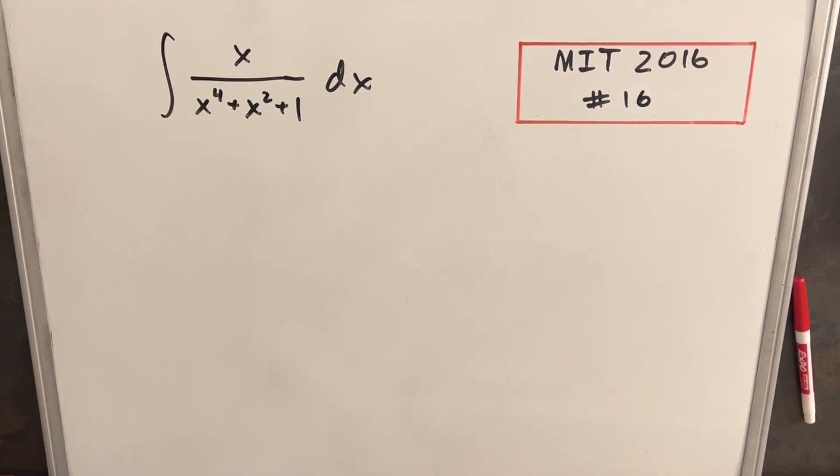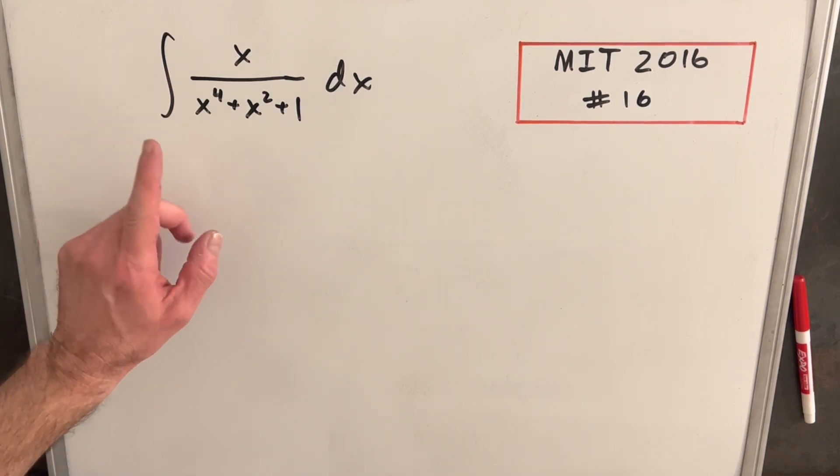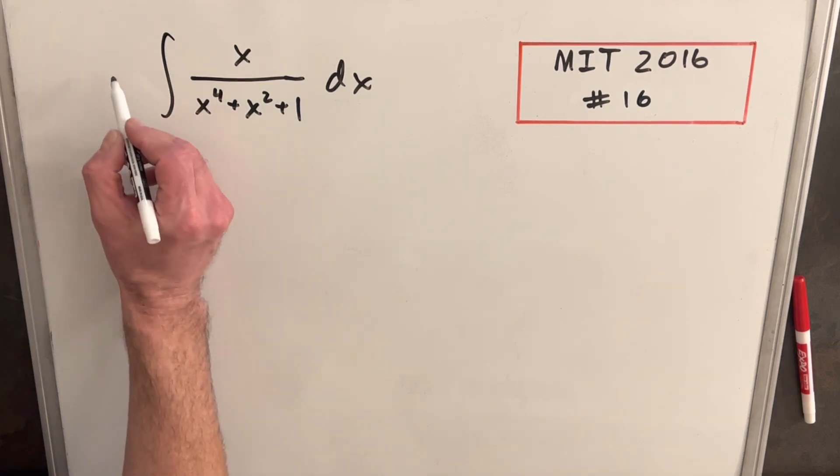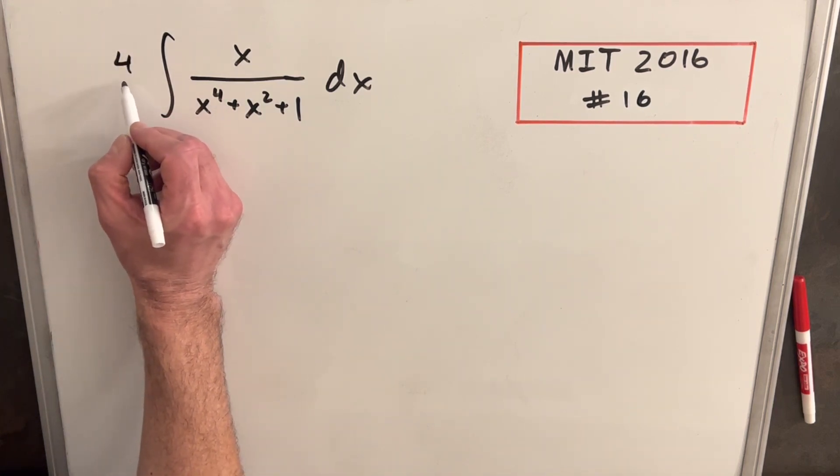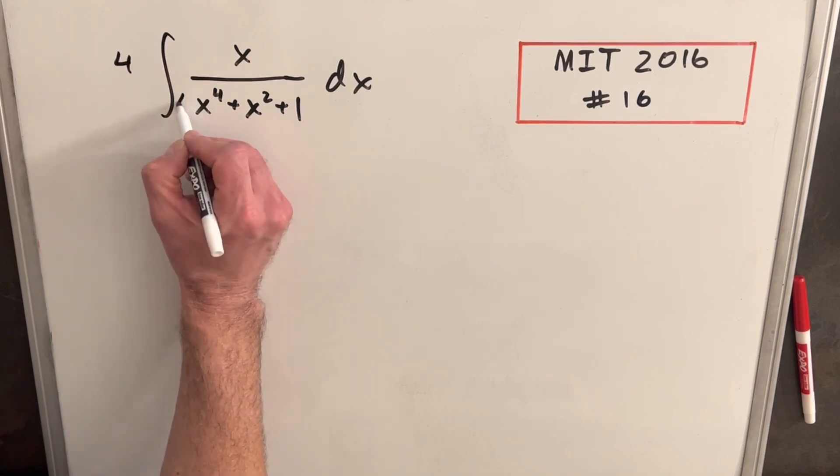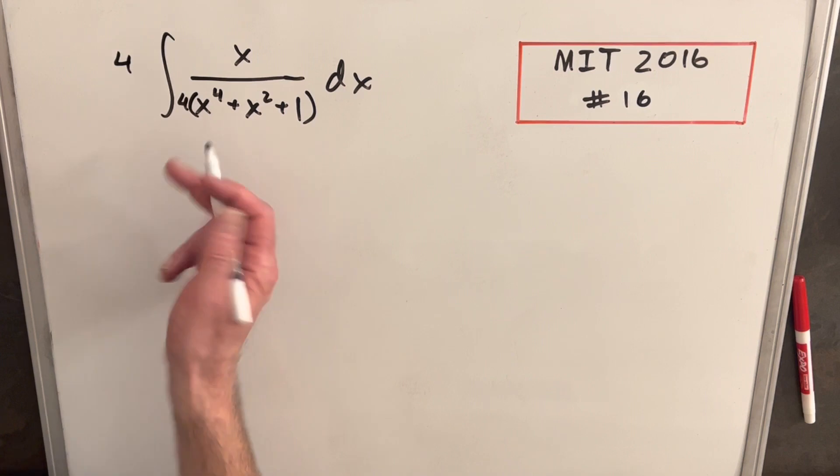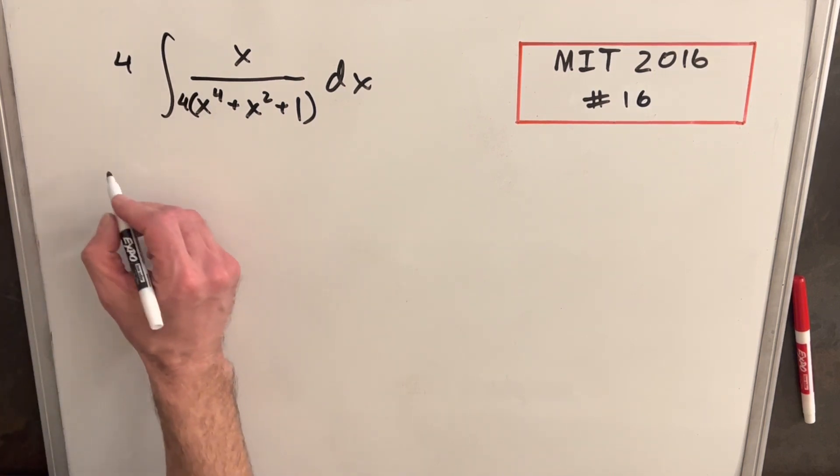Looking at it at first, I notice I can't really do a u substitution just the way it is here. And I can't factor this right away, but I can complete the square. So I'm going to do, just to make this a little easier on myself, I'm going to multiply by a 4 on the outside and a 4 on the inside here so that I don't change the expression. But that's just going to help me a little bit with completing the square part.